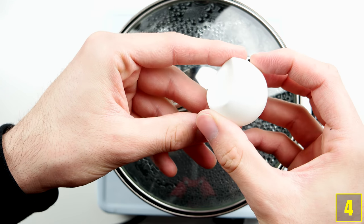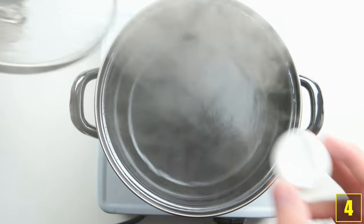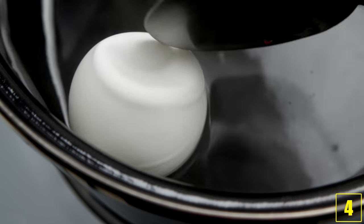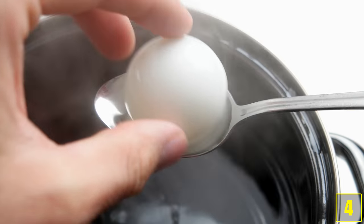And number 4. If your table tennis ball has a dent like this, just place it in some hot water for a few seconds. The air will expand in the ball and the dent will disappear.